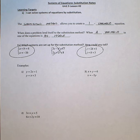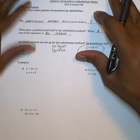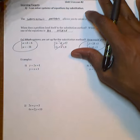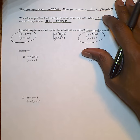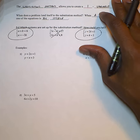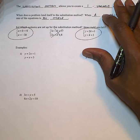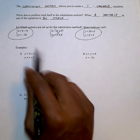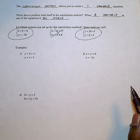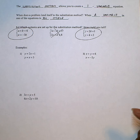I like to think of substitution as nicknames. You're essentially finding out that one thing is the same as the other, and so we replace it later. Let's look at our first example. We have the system y equals 2x plus 1 and y equals x plus 3.